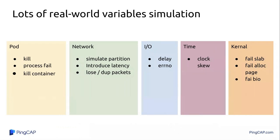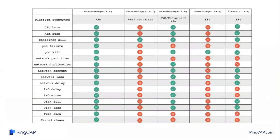Another reason is that Chaos Mesh can provide lots of real-world variables. Chaos Mesh can help you kill processes randomly, delay the network, make file reads or writes fail, and can even inject failures into the Linux kernel directly. Looking at the big picture comparing Chaos Mesh to other Chaos Engineering platforms, you can see that Chaos Mesh provides nearly the most comprehensive ways to inject failures. Compared to Chaos Monkey, which provides only a few options, Chaos Mesh covers far more fault types. That's why we decided to build our own Chaos Engineering platform.